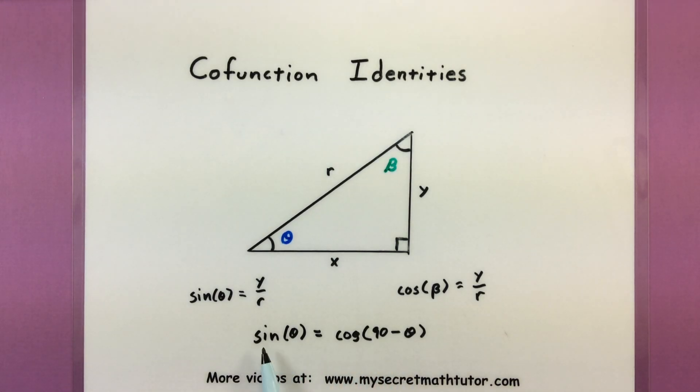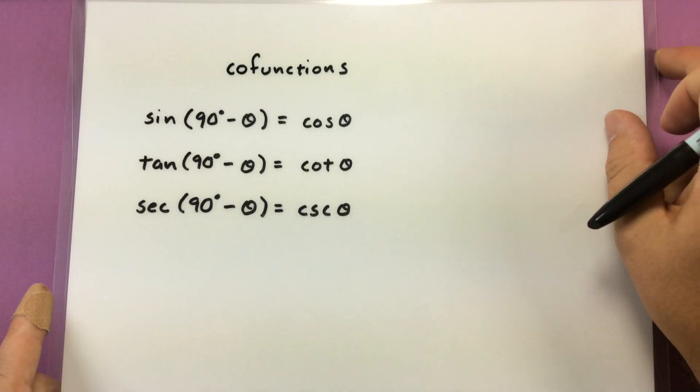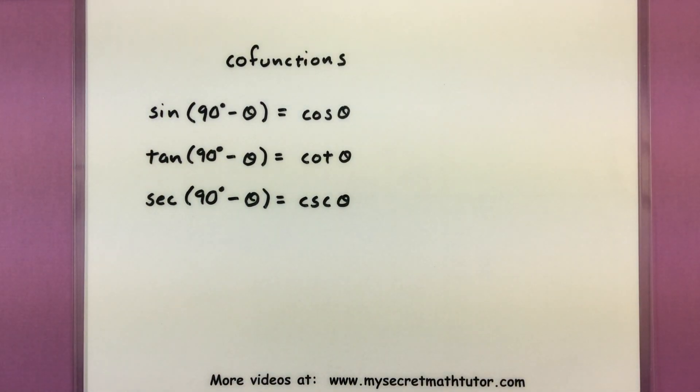So like sine and cosine. Now you can do this with all of your trigonometric functions. And this is where the cofunction identities come from.